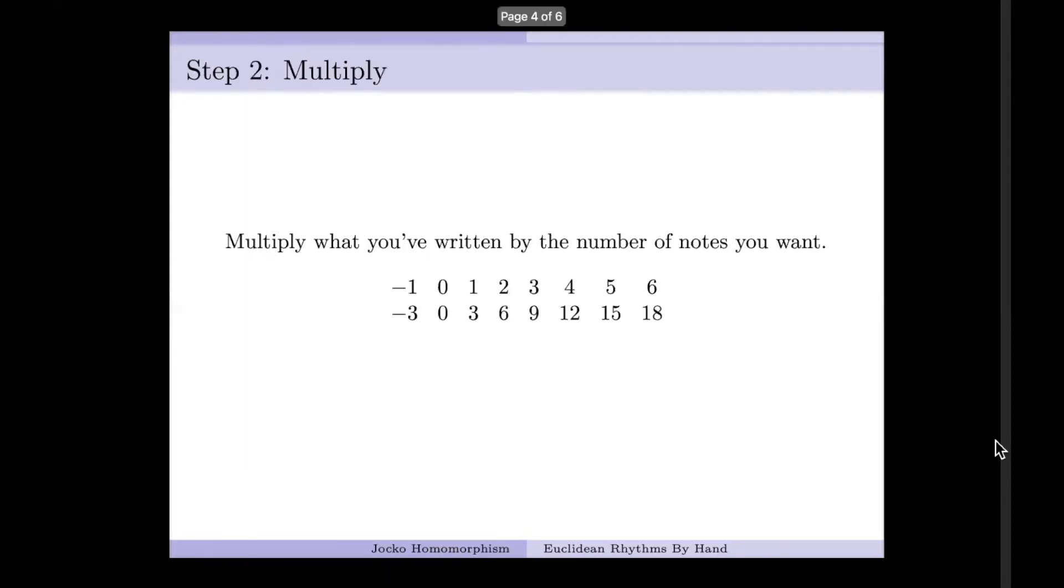Okay, step two. Now we're going to take the number of notes that we want, in my case that's three, and we're going to multiply that against all the numbers that we've written down so far. So I get minus three, zero, three, six, nine, 12, 15, and 18. Easy peasy.